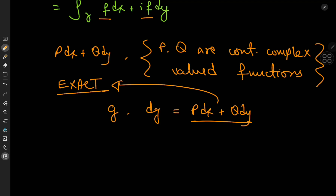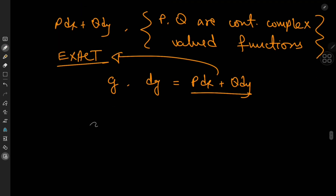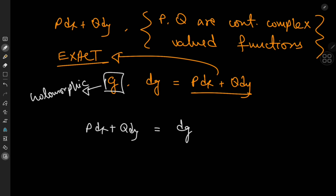Now let's paint an integral picture of exactly what we know so far. We have p dx + q dy. Let's say this is an exact differential, meaning we can write it as the differential of some holomorphic function g, and let's integrate over the contour gamma.